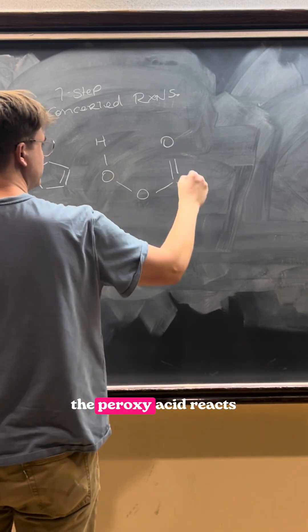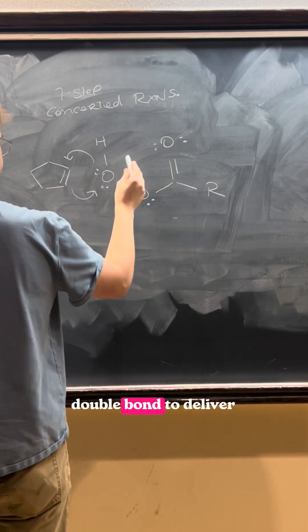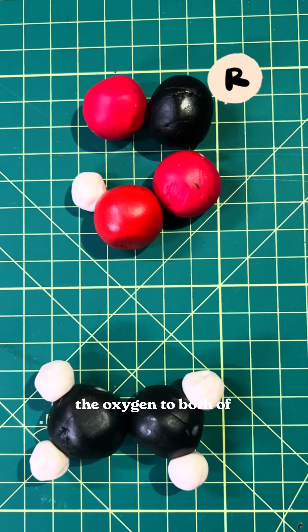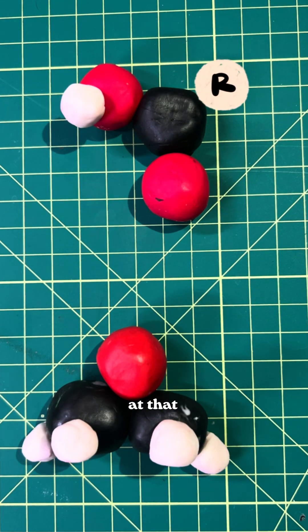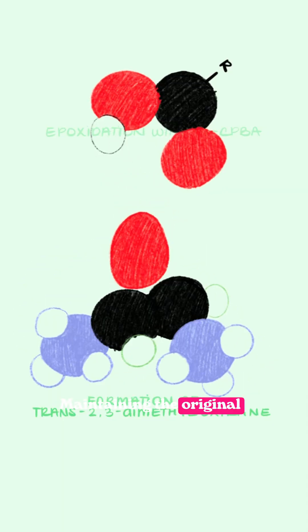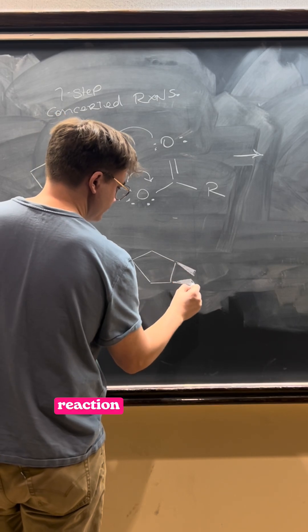Throughout that reaction, the peroxy acid reacts with a specific face of the double bond to deliver the oxygen to both of the double bond carbons at that face, maintaining the original stereochemistry of the alkene throughout the reaction.